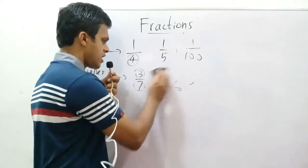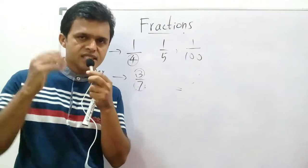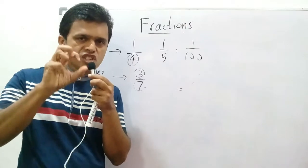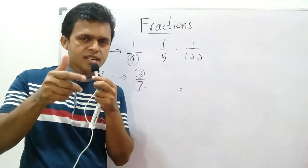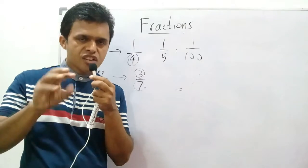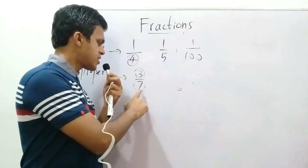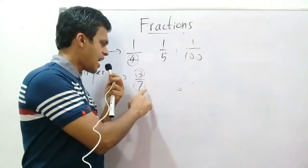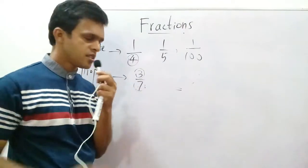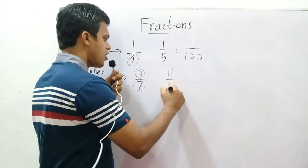When a fraction is considered proper, the digit in the denominator must be greater than the digit in the numerator. You can see here: seven is greater than three, so three over seven is a proper fraction. How about eleven over twelve? That is also a proper fraction.